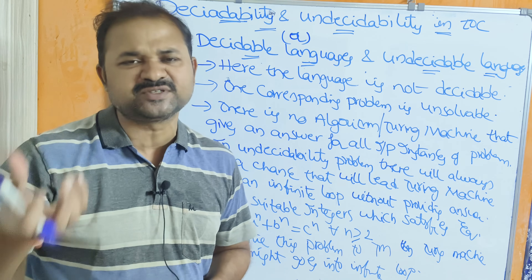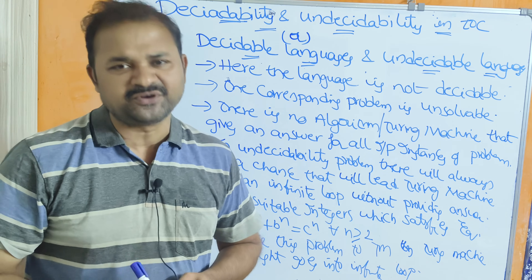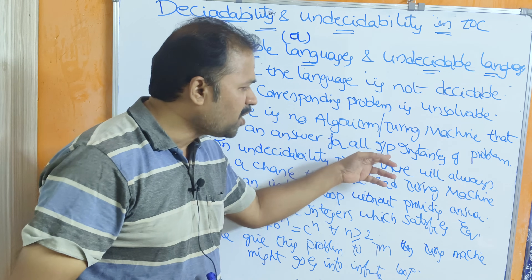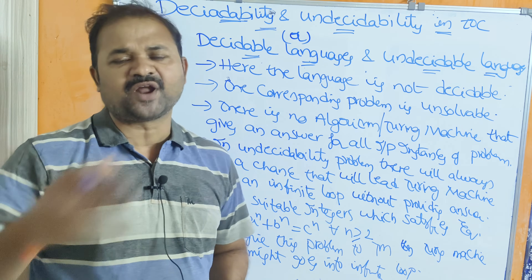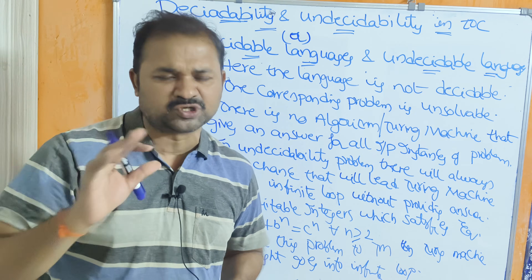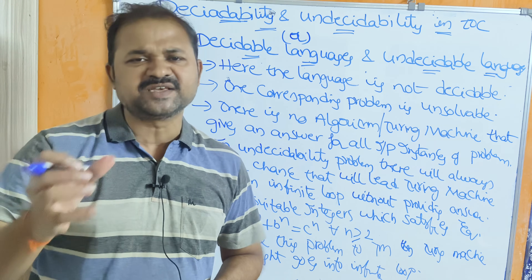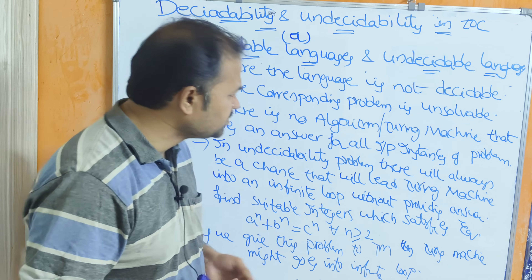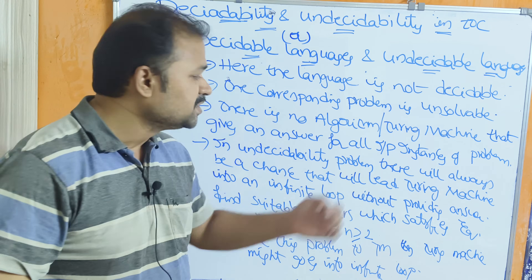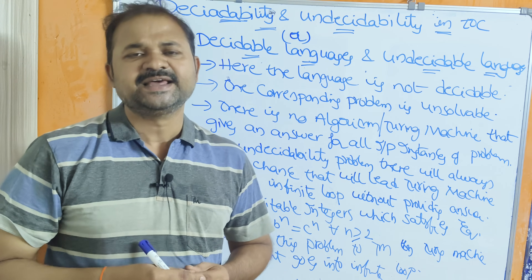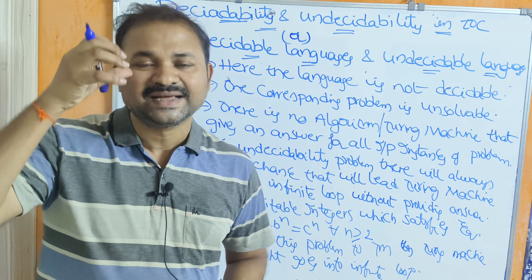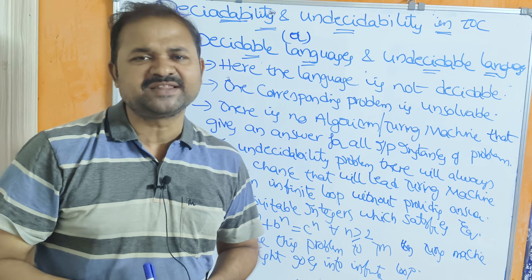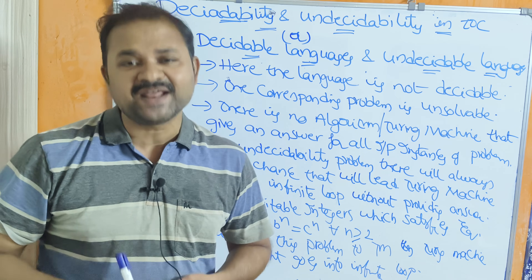For some inputs, it may produce the correct output, but for all inputs, it won't produce the correct output. There is no algorithm or Turing machine that gives an answer for all input instances of the problem. In an undecidability problem, there will always be a chance that the Turing machine enters an infinite loop without providing the answer, producing only a few outputs before looping indefinitely.